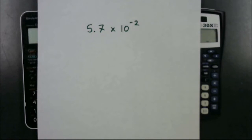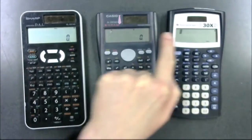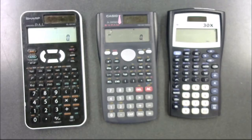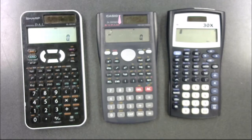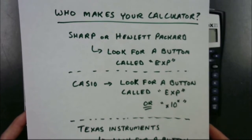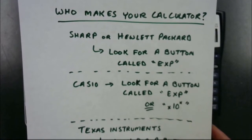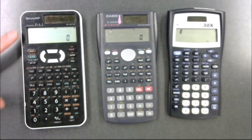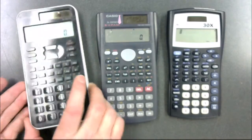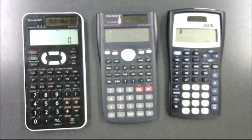Let me show you how to find your scientific notation button. First, figure out who makes your calculator — there are basically only four companies: Sharp, Casio, Texas Instruments, and Hewlett-Packard, and they use different notations for the button. If you have a Sharp or a Hewlett-Packard calculator, look on your keypad for a button that says EXP. On my Sharp calculator, I can find the EXP button right there.